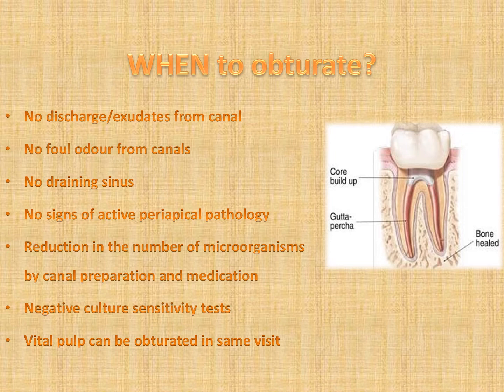There should not be any draining sinus. If there was a draining sinus before, it has to be healed. There should not be any signs of active periapical pathology. There should be a reduction in number of microorganisms by canal preparation and medication. A negative culture sensitivity test if you are doing one. Also, a vital pulp can be obturated in the same visit — that means if you are doing root canal treatment for a vital pulp, you can consider single visit endodontics.